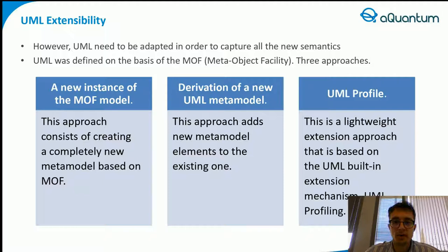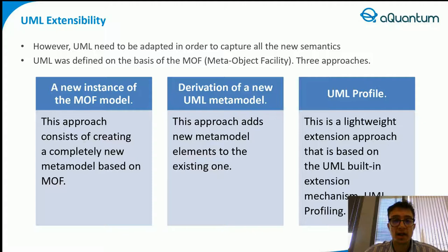Despite the advantages mentioned, UML needs to be extended in order to capture all the new semantics and building blocks involved in quantum software. As it was defined on the basis of the Meta-Object Facility, which is a metamodel, UML is therefore a metamodel used to define different UML models, and its extension consequently consists of extending the metamodel. It is possible to extend it by principally following three different approaches. First, a new instance of the Meta-Object Facility model — this approach consists of creating a completely new metamodel based on the Meta-Object Facility. The result of this heavyweight approach is a new domain-specific modeling language.